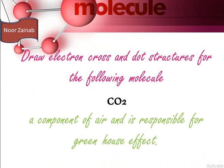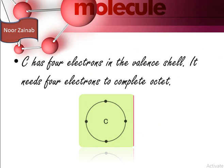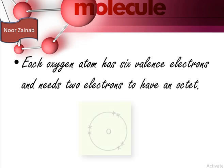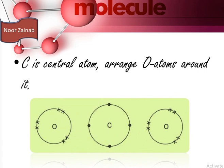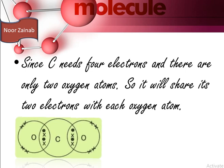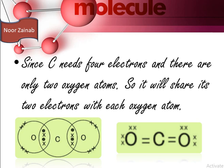For CO₂, carbon has four electrons in the valence shell and needs four more to complete its octet. Each oxygen atom has six electrons and needs two electrons. Carbon will be the central atom with oxygen atoms arranged around it. Since carbon needs four electrons and there are two oxygen atoms, it will share two electrons with each oxygen atom, forming double bonds. The valence electrons of carbon are shown by dots and valence electrons of oxygen by crosses, and the Lewis structure shows the covalent bonds as dashes.